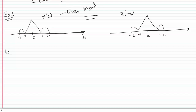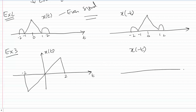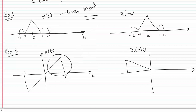For the third example, we have x(t) which looks something like this, and I have to determine if this signal is even, odd, or neither. To check, we first draw its time-reversed counterpart x(-t). This part gets reflected to the other side of the origin, and that part gets reflected to this side of the origin, and if I do that I end up with this plot.